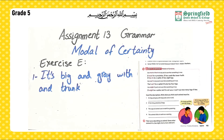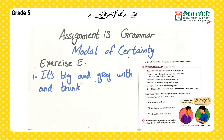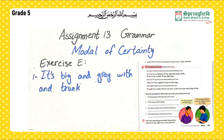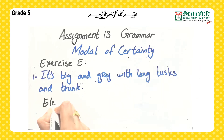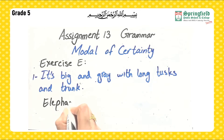Now let's move to Exercise E. In this exercise, you have to read the description and tell which animal each must be. I'll do the first one: 'It's big and gray with long tusks and a trunk.' What has long tusks and a trunk? That is an elephant. You have to do the rest in the same way.